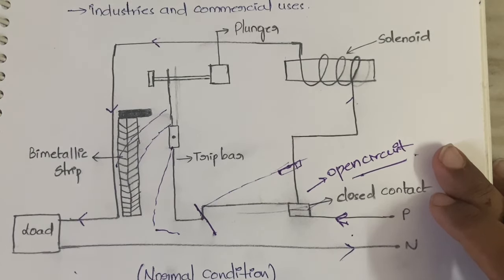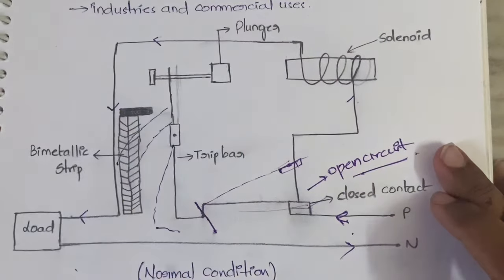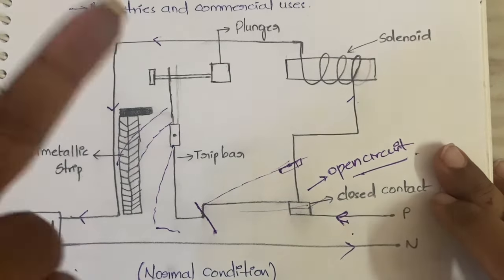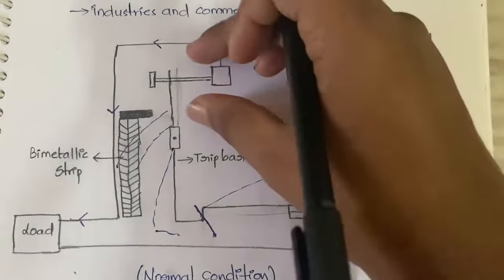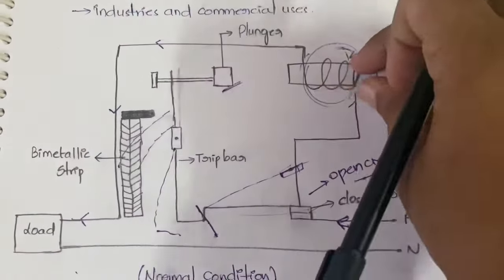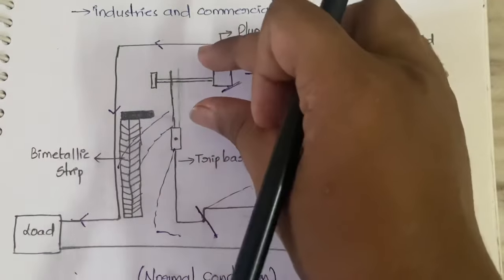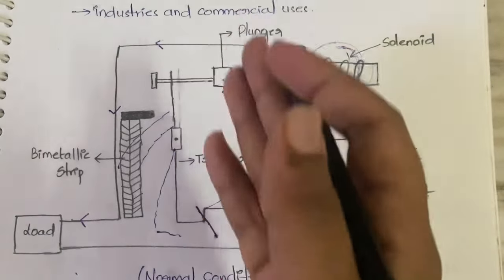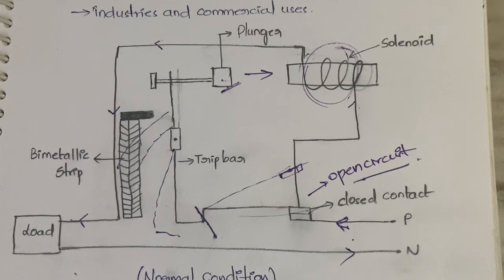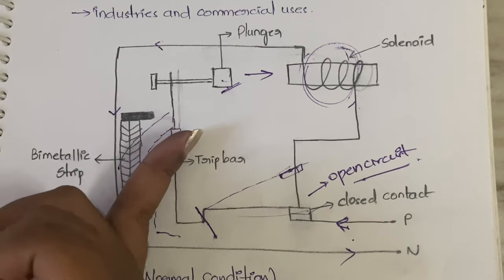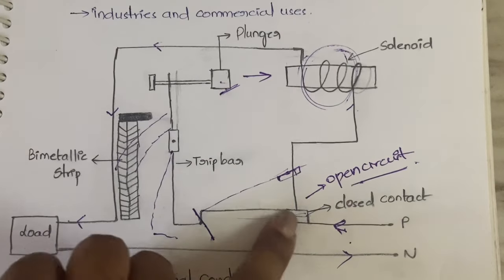When there is a sudden increase in current, the solenoid has metal windings, and because of them a magnetic field is generated inside and around the solenoid. Because of this magnetic field, the plunger — which is made of metal — is attracted towards the magnetic field. When the plunger is attracted, it gets displaced, and since the plunger is connected to the trip bar, the trip bar also gets disturbed.